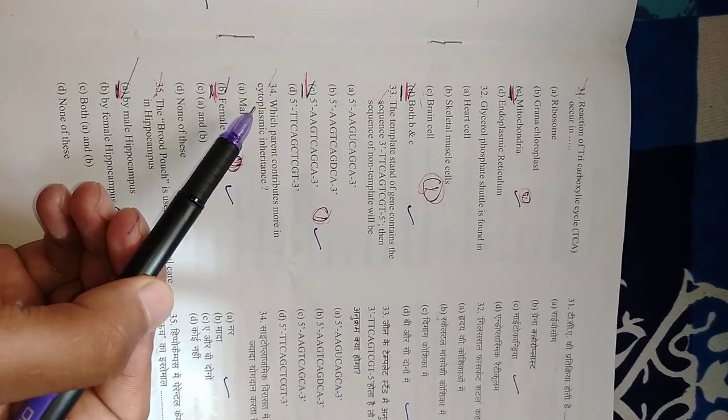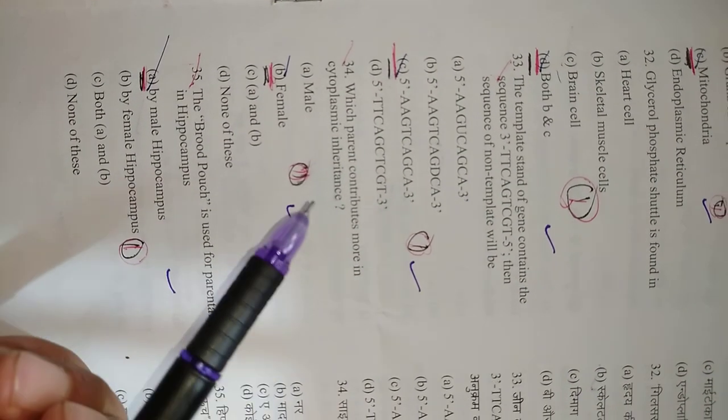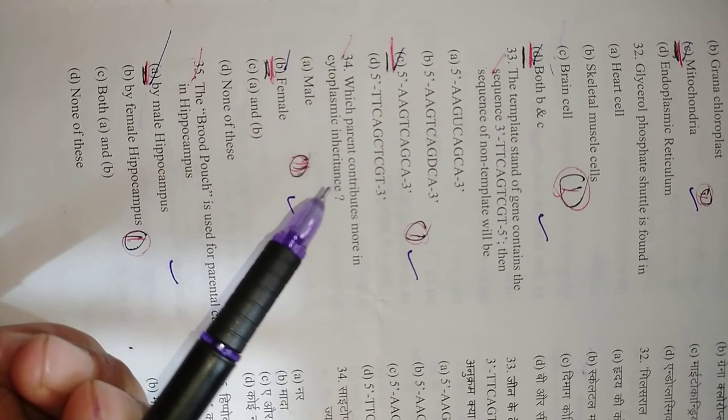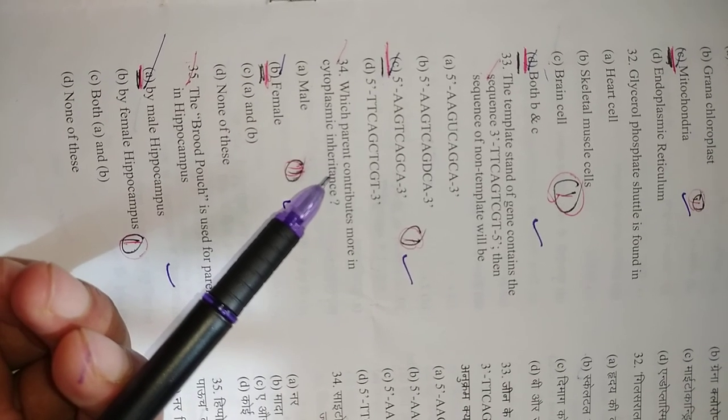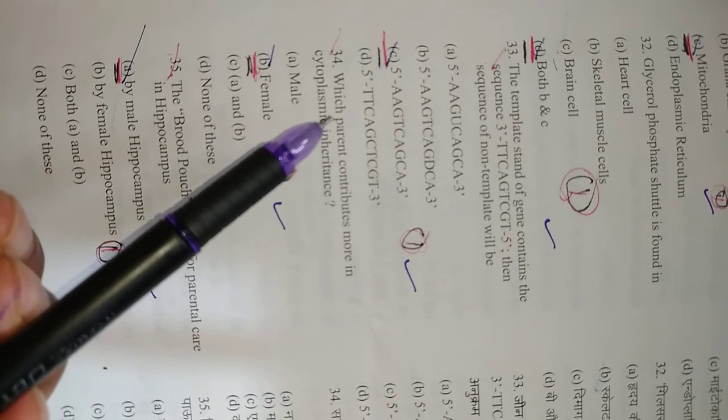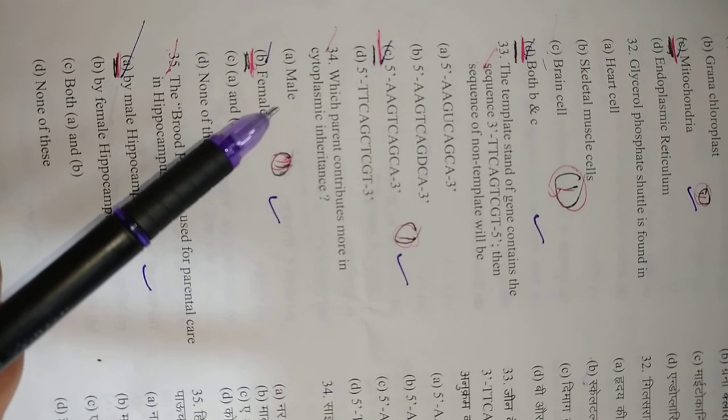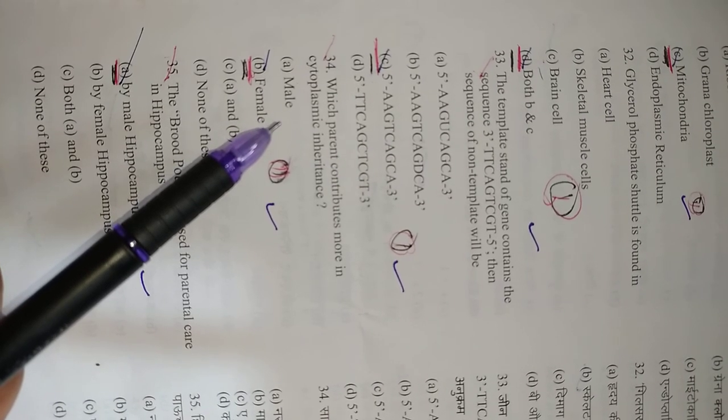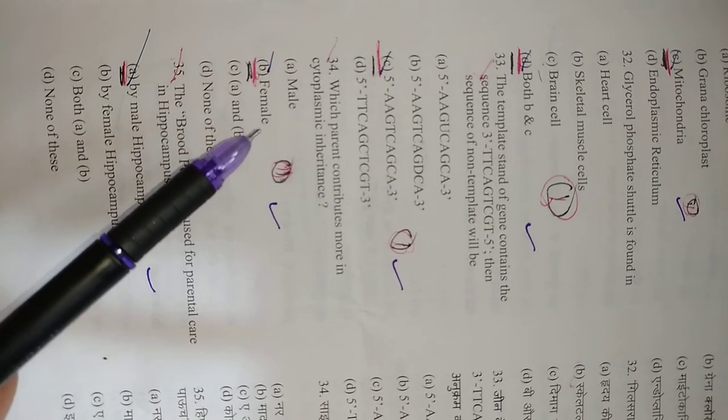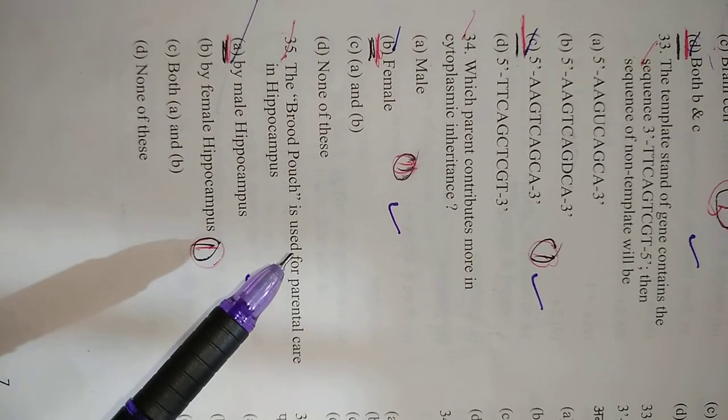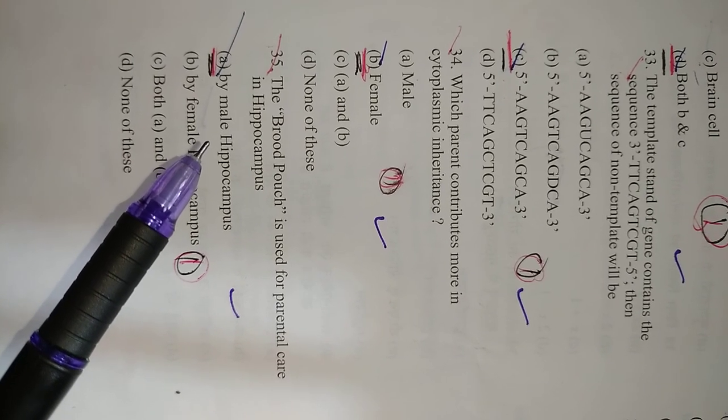Question number 34: Which parent contributes more in cytoplasmic inheritance? Cytoplasmic inheritance is also called organelle inheritance, and as you all know, organelle DNA is only transmitted from the female to the offspring. So right option is B, female. Question number 35: Brood pouch is used for parental care in hippocampus—these are used by the male seahorse. So right option is A.